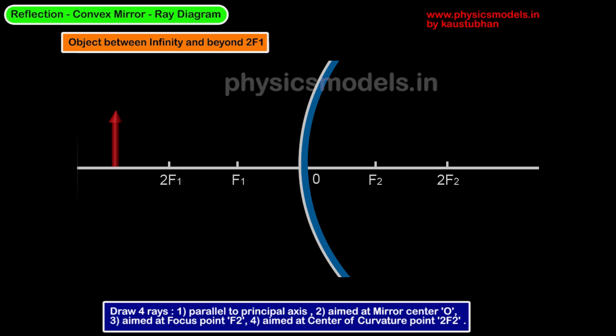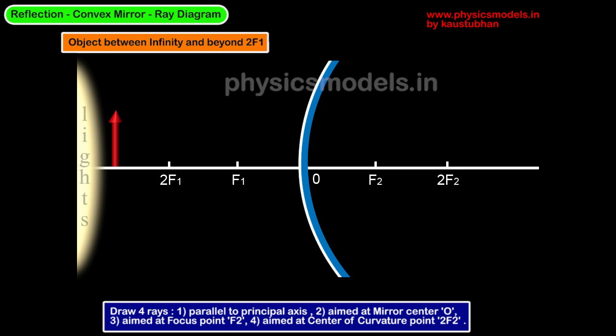The points F1 and F2 are focal points. F1 is on the real side and OF1 equals the focal length. Similarly, OF2 equals the focal length. The point 2F2 is the center of curvature. If you put a compass needle on 2F2 and draw a radius, you should be able to draw the convex mirror's curvature. 2F1 is again twice of F1 from the point O.